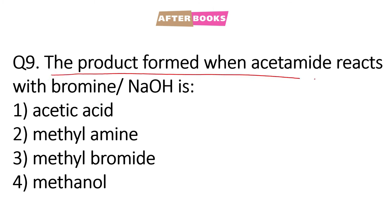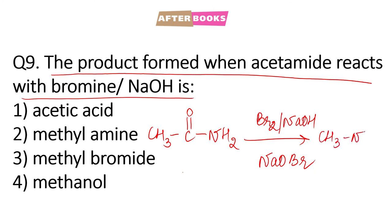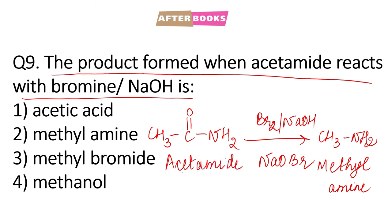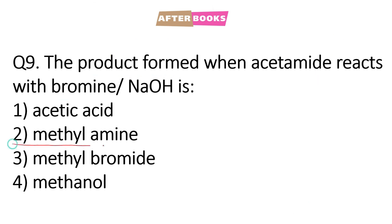Question number 9: the product formed when acetamide reacts with bromine in the presence of NaOH. Acetamide, CH3CONH2, reaction karwani hai with bromine and NaOH. Toh yahan se form ho jayega NaOBr, which forms methylamine from acetamide. That is a primary amine is formed in this reaction, and this is the name reaction which is Hoffmann bromamide reaction, in which the product is methylamine, which is option number 2.